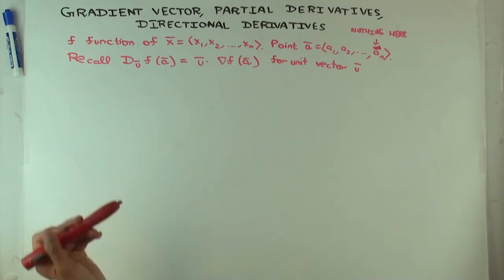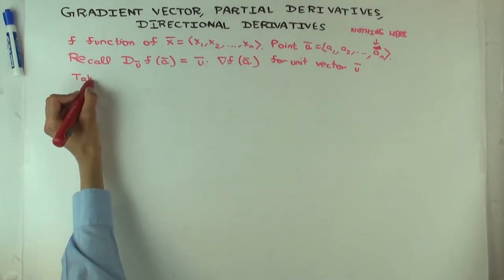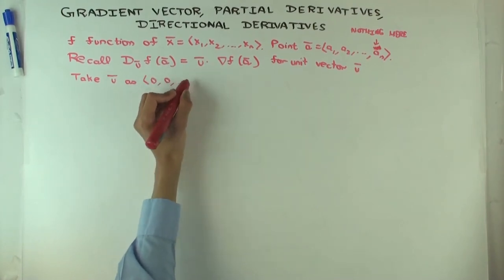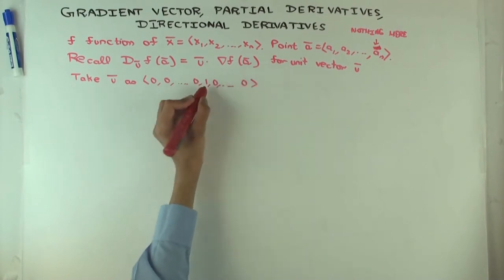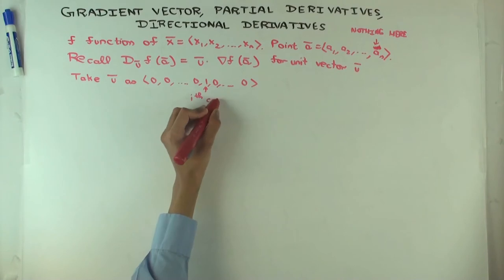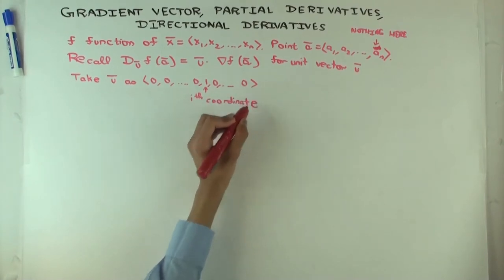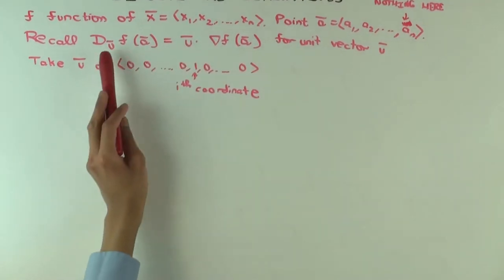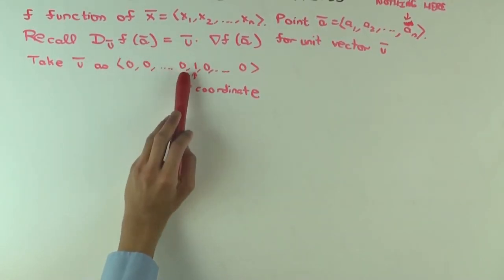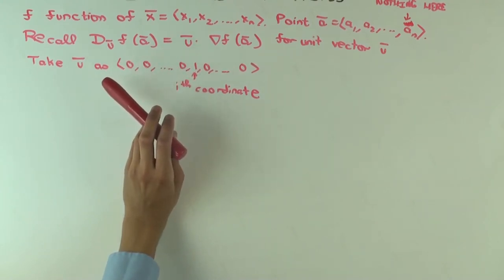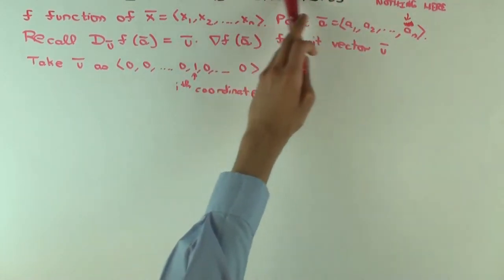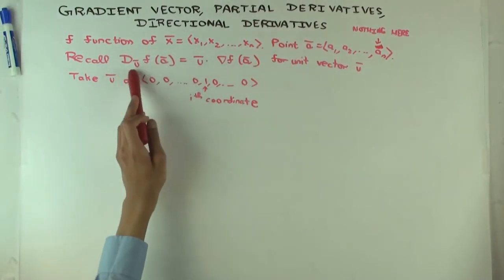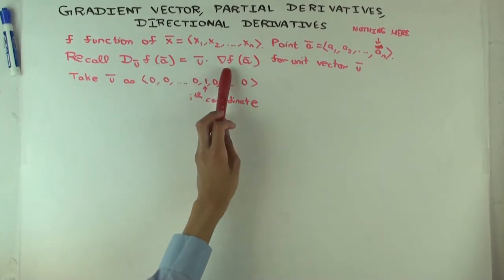If the gradient vector doesn't exist, you cannot calculate it this way. But if the gradient vector exists, it's in this form where u is a unit vector. Now, what happens if I take u to be the unit vector in the direction of a particular coordinate? So take u to be a unit vector where this is just the ith coordinate — I put a 1 in that coordinate and zeros in all the others. What does this tell you about the directional derivative in this direction? It's the ith component of the gradient vector.